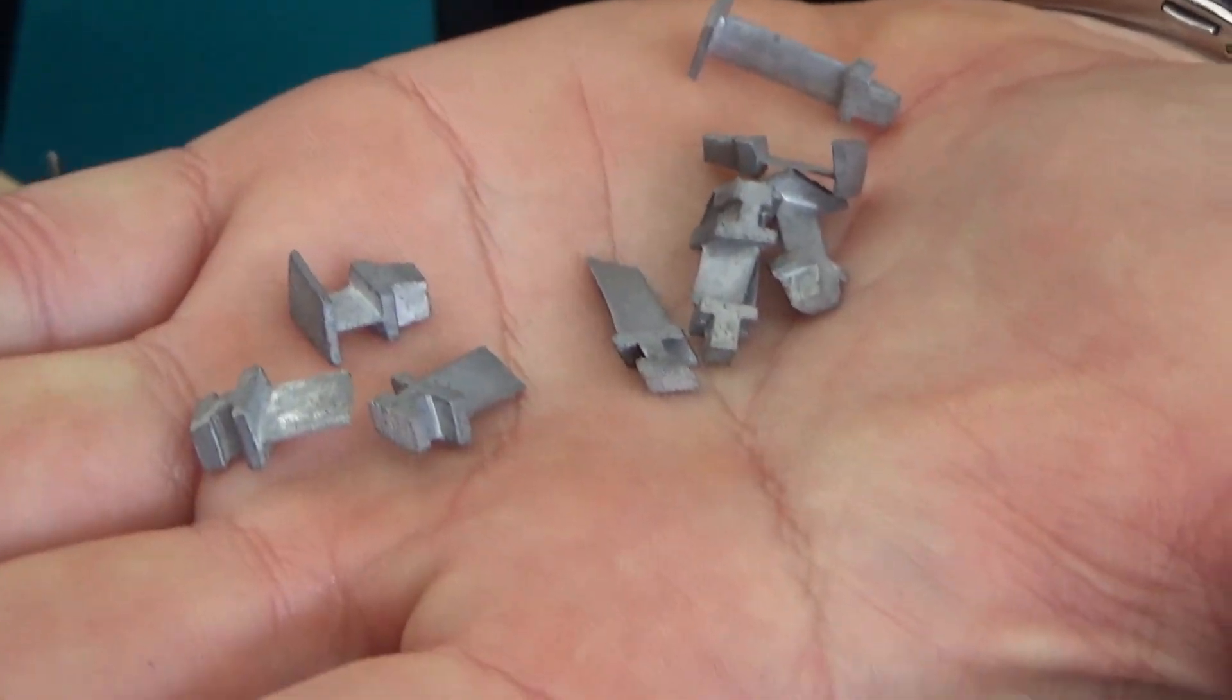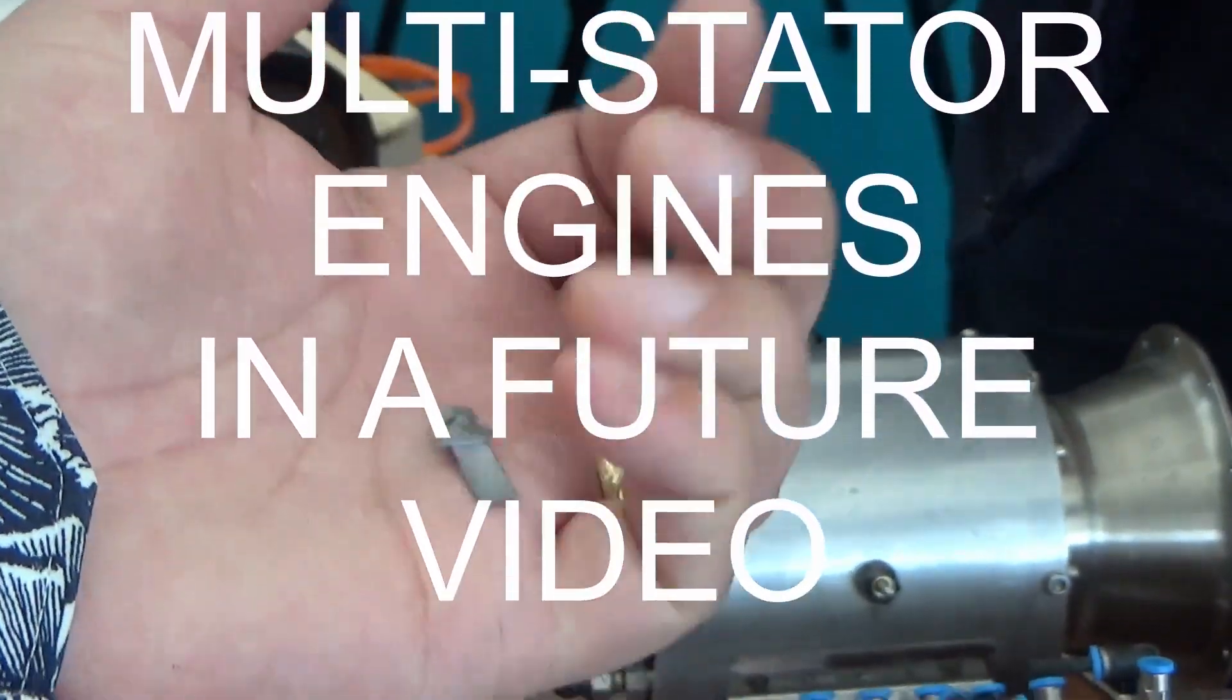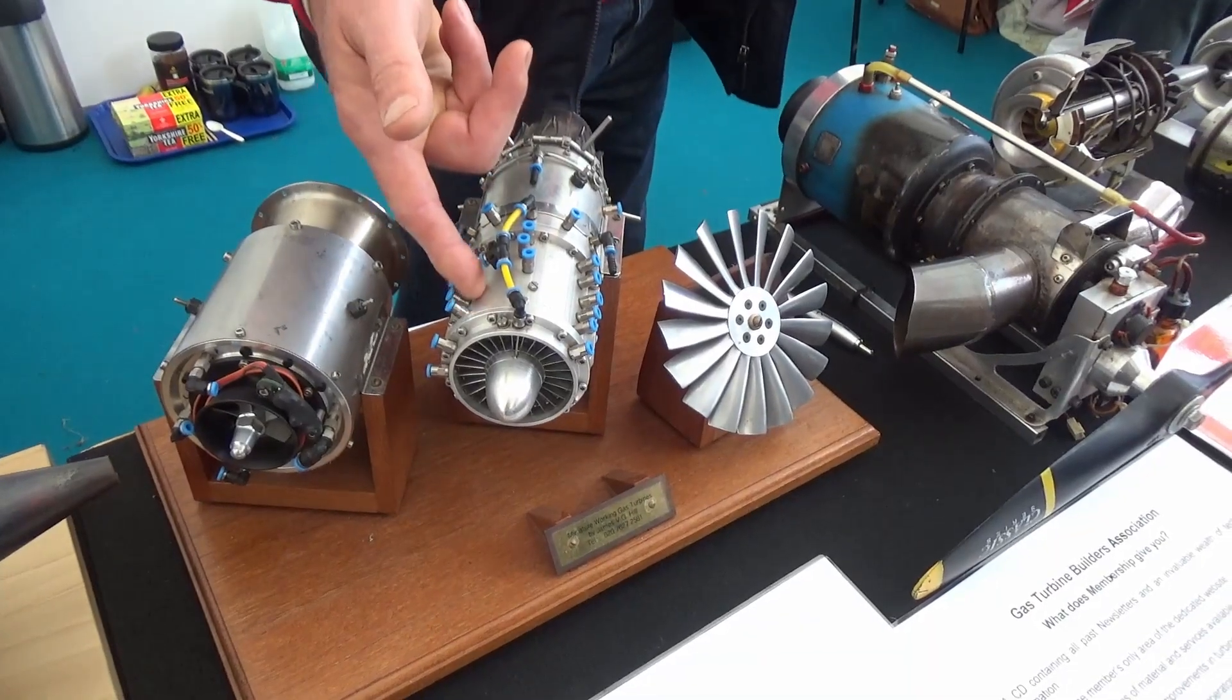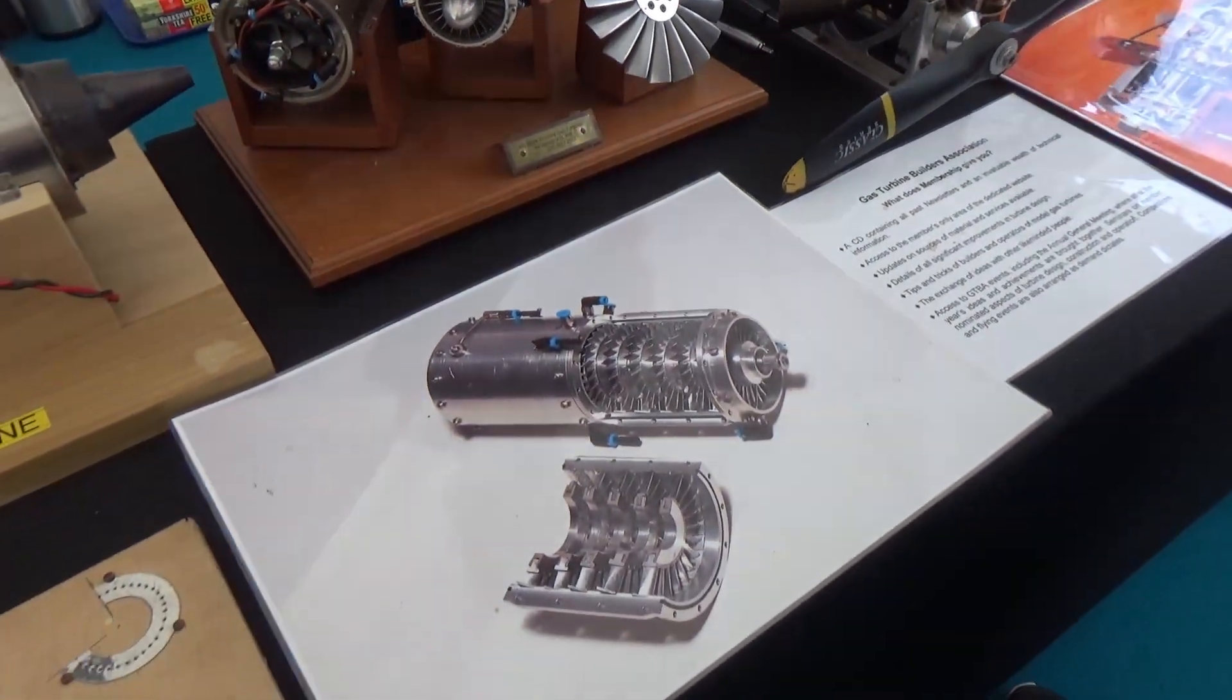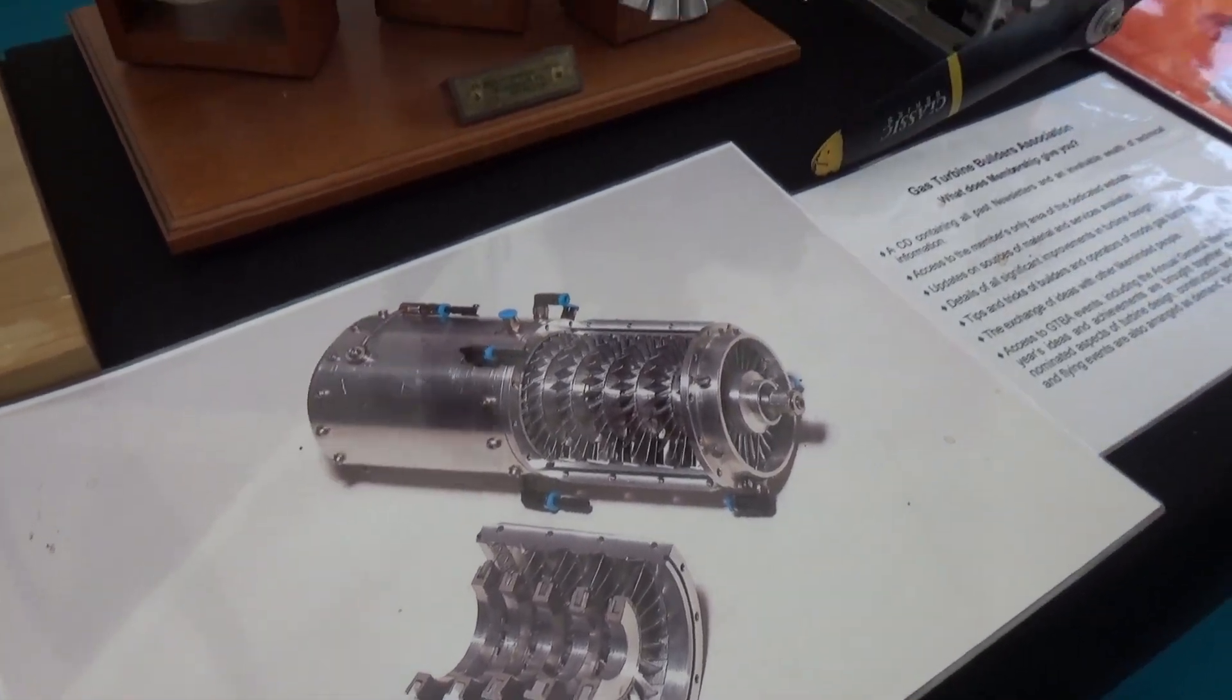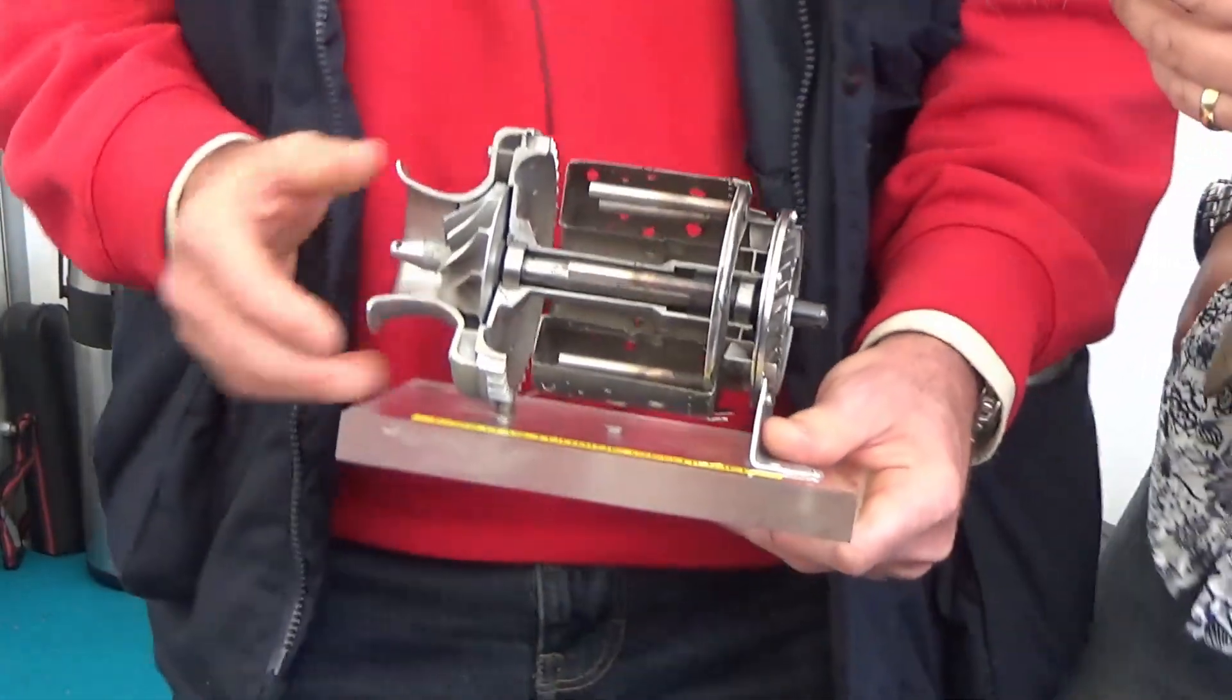So those are the blades. Each one is individual. If you hold your hand out, each one weighs 0.2 of a gram. Weighs nothing. Yeah, absolutely. It's a castable grade of high tensile aluminum. This is the cold end, this is the compressor, so it'll only run at about 200 degrees, which is well within the operational parameters of aluminum. Sucks, squeeze, bang, blow. Exactly. That's the one.